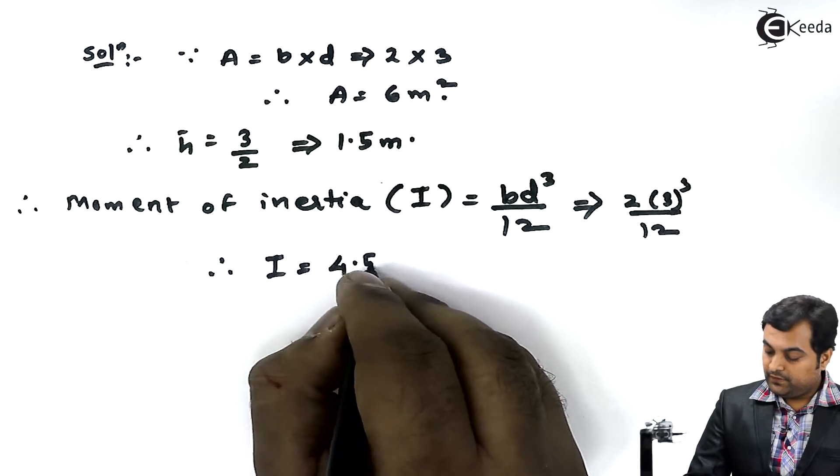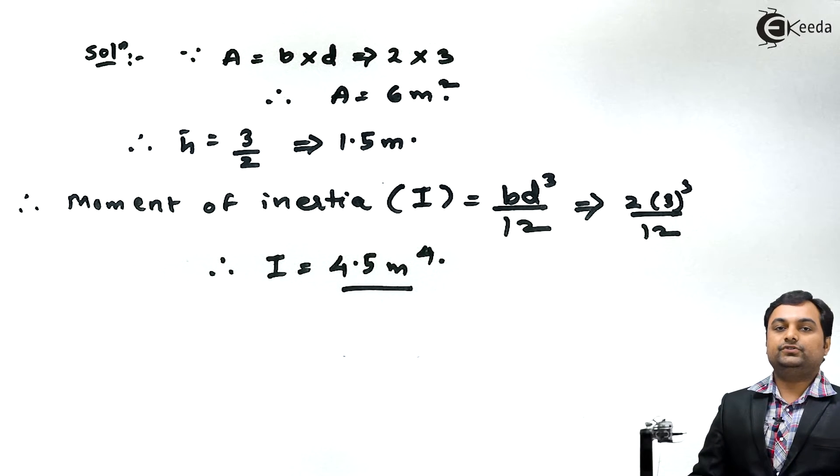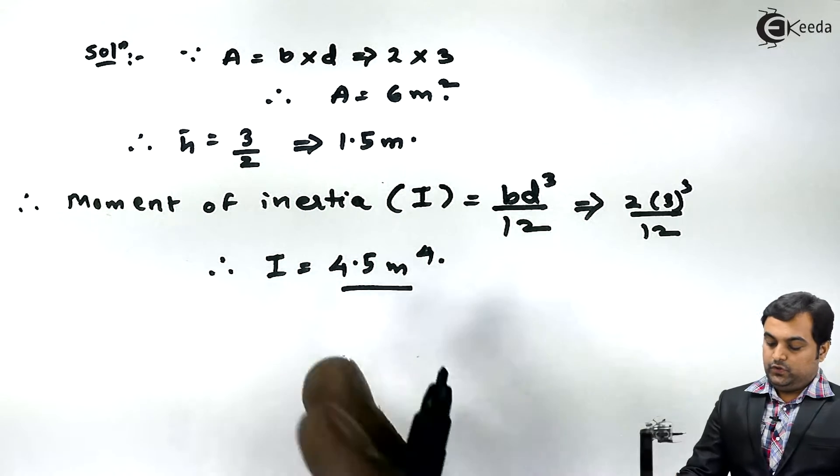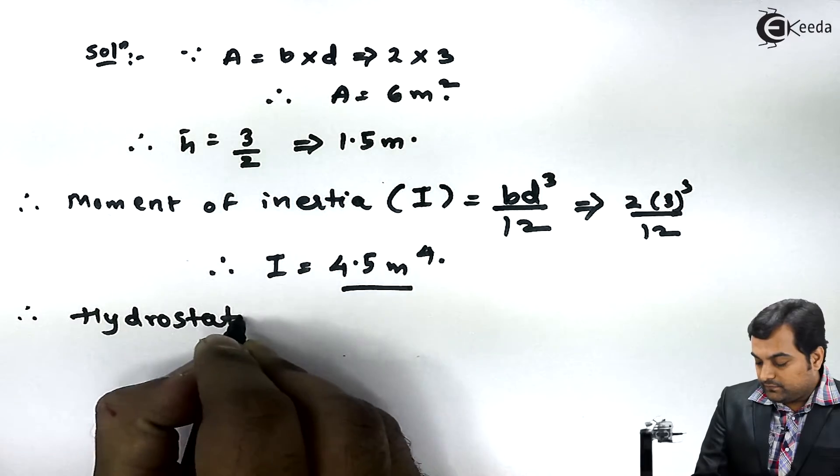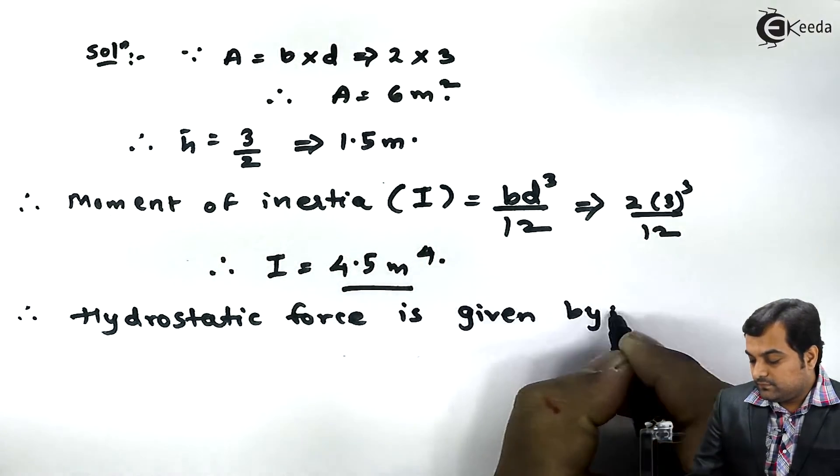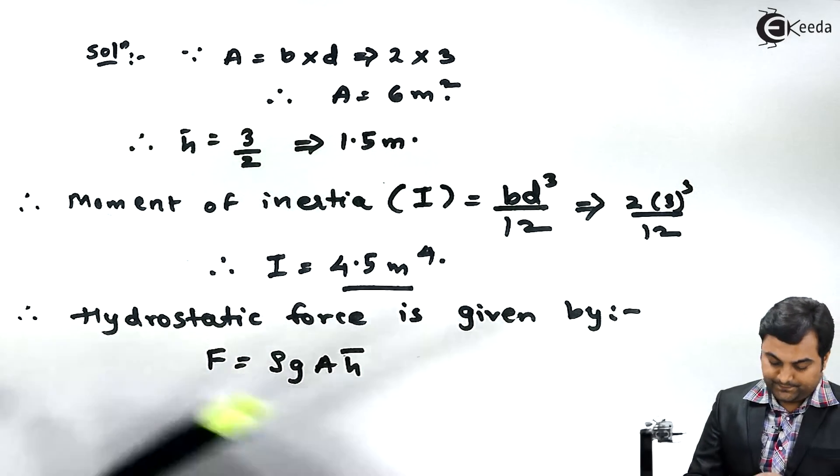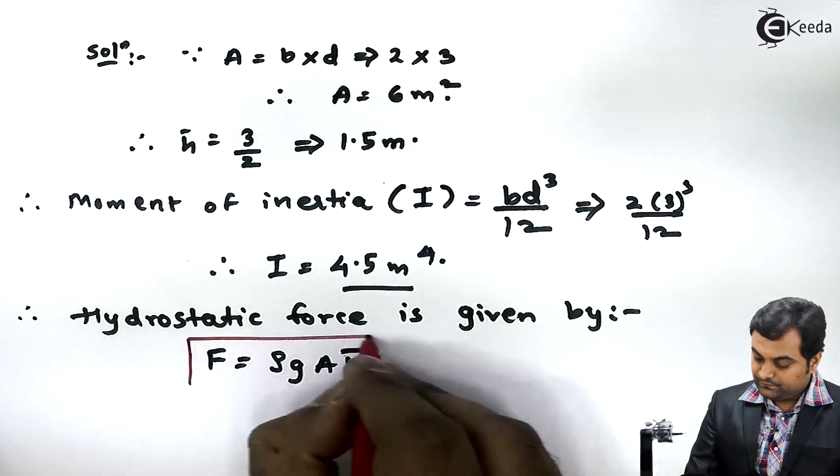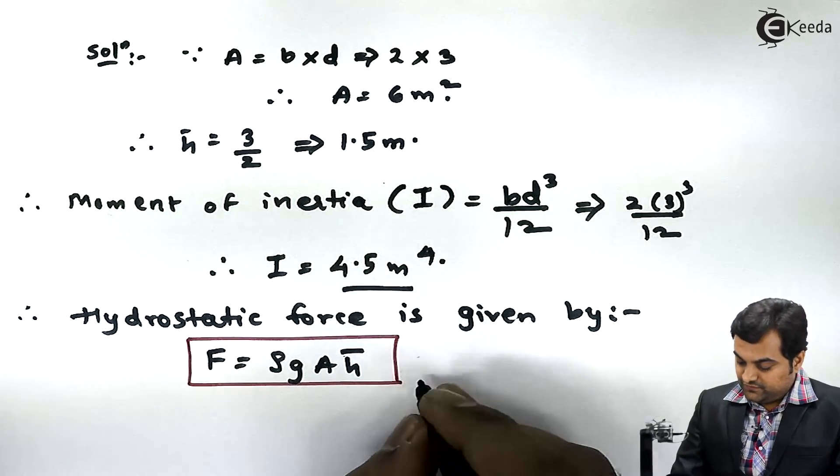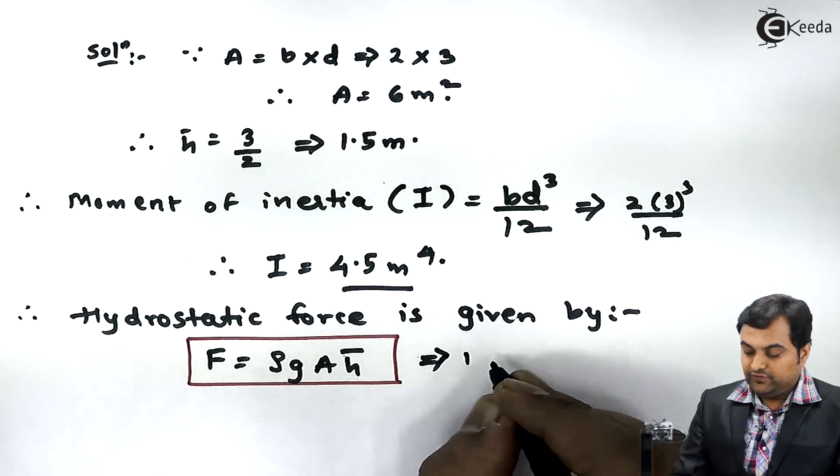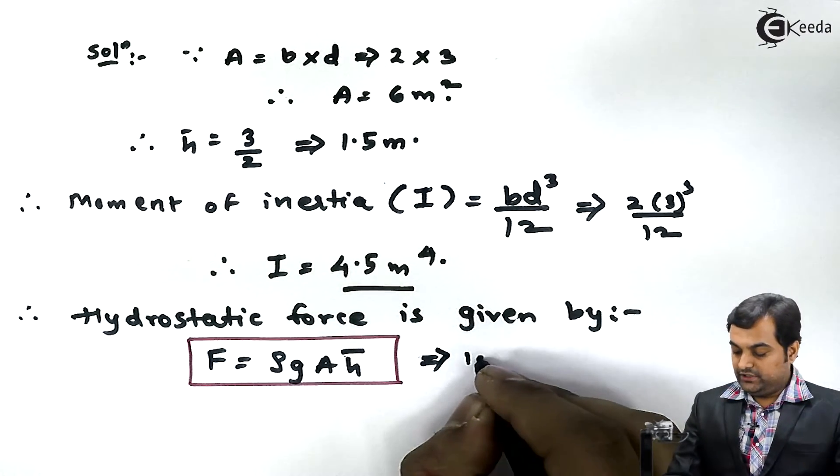4.5 meter raised to 4. We have calculated moment of inertia because it would be used in the formulas. Now, therefore hydrostatic force is given by the formula F = ρgA·H̄. Here ρ is the density of the fluid. Since in the question it is mentioned that it is water, the density of water is 1000.